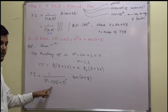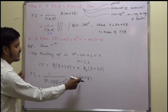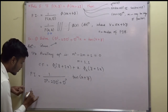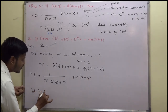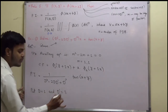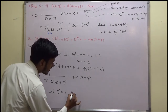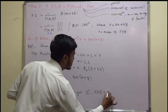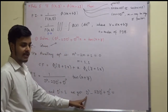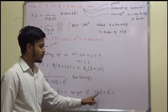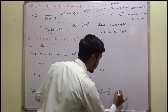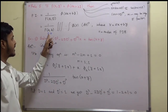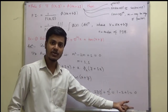PI = 1 / (D² - 2DD' + D'²) · tan(x + y). Now substitute D equal to 1 and D' equal to 1, since the coefficient of x is 1 and coefficient of y is 1. We get D² - 2DD' + D'² = 1 - 2 + 1 = 0. Since f(a,b) is not non-zero, the case fails.